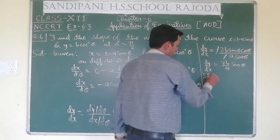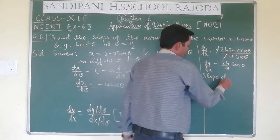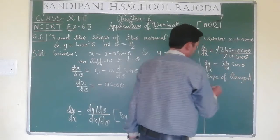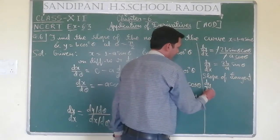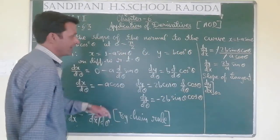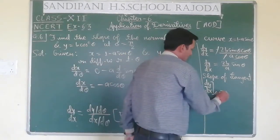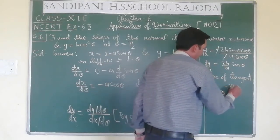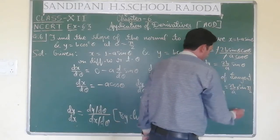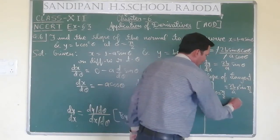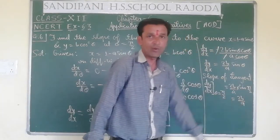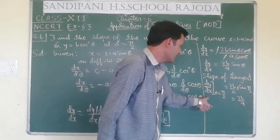Slope of tangent = dy/dx at θ = π/2, which is (2b/a) · sin(π/2) = (2b/a) · 1 = 2b/a. So the slope of the tangent is 2b/a.